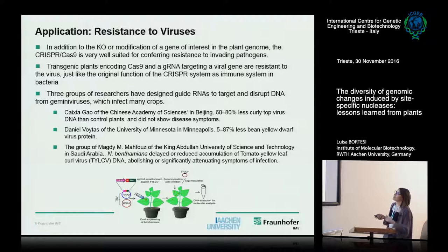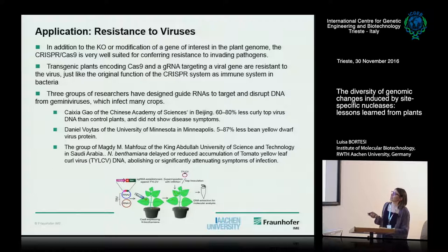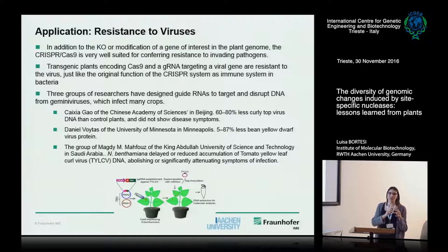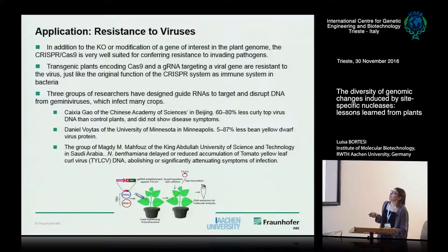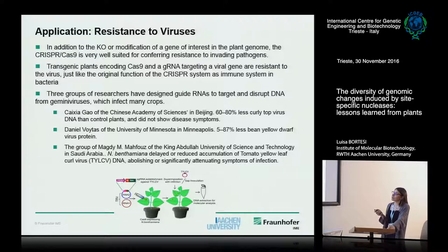One last application I want to mention is a transgenic application of the CRISPR-Cas system: if you introduce the CRISPR-Cas9 system into a plant and make it target DNA from invading pathogens, you can have a plant resistant to viral DNA — essentially mimicking the acquired immunity of CRISPR-Cas9 itself in bacteria. This has been tested by three independent groups and works quite efficiently; you can reduce infection levels down to plants showing no symptoms at all.